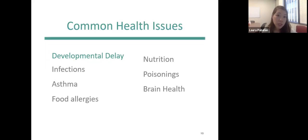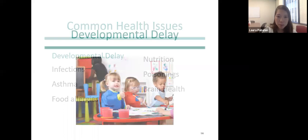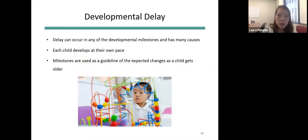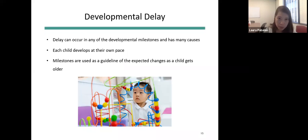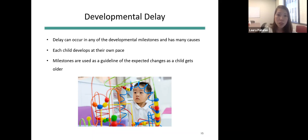Now we'll shift gears and talk about health issues commonly encountered by children affected by housing insecurity, starting with developmental delay. Children affected by homelessness are more likely than their peers to have developmental delays and lower academic performance. CPS estimates more than 16,000 students were homeless in the 2018–2019 school year. Among those enrolled in CPS, up to 10 to 20% have developmental delays. According to Children's Health Watch, by age five, most children affected by homelessness will have at least one major developmental delay.